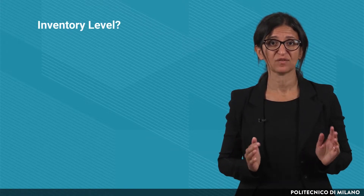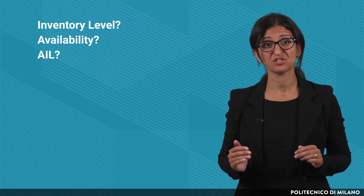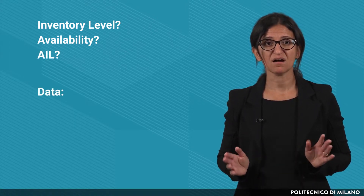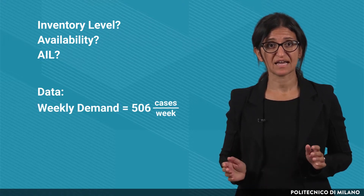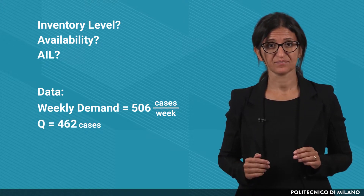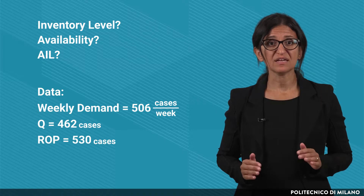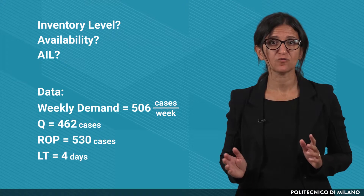Let's apply the reorder point model to a numerical example. The objective is to represent the expected pattern of both the inventory level and availability, as well as to identify the average inventory level. The input data are: weekly demand equal to 506 cases, order quantity equal to 462 cases, reorder point quantity equal to 530 cases, and replenishment lead time equal to 4 days.